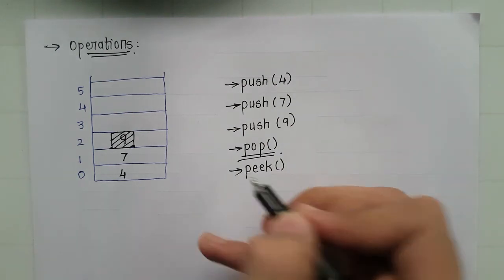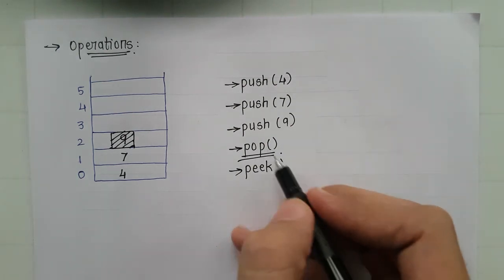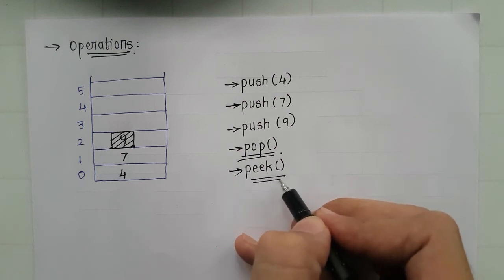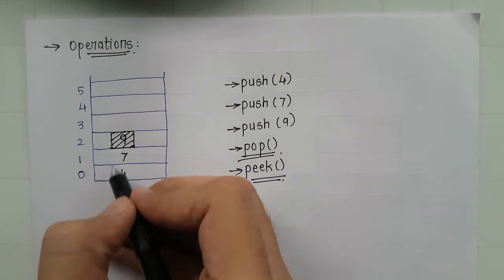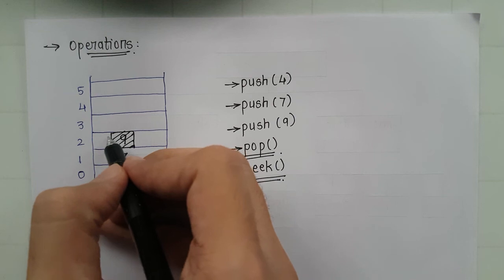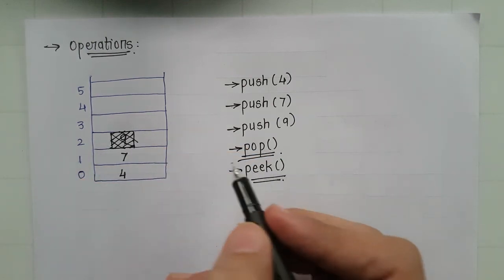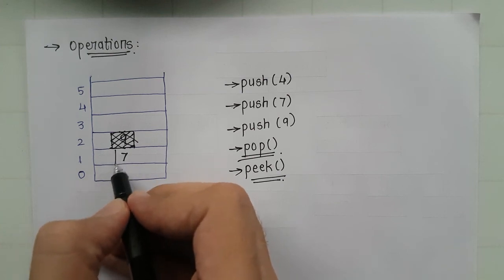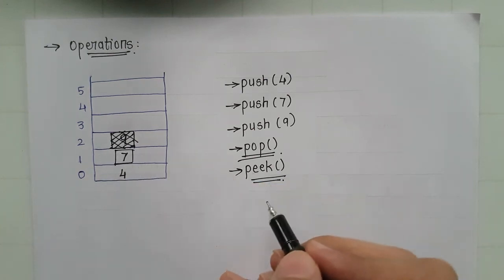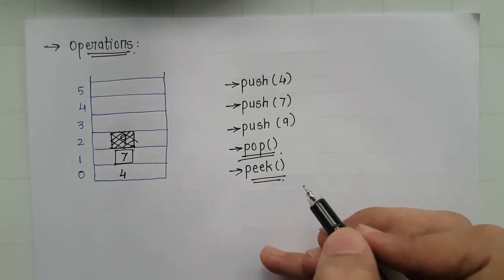Now peak function. Now when we are calling the peak function, it would check for the topmost element. Now what is the topmost element here? This is deleted. Don't consider this now. Now this is deleted after performing the pop. So now the topmost is 7. So 7 would be displayed on our output screen.